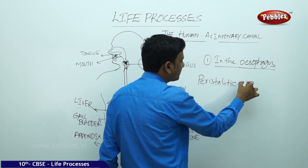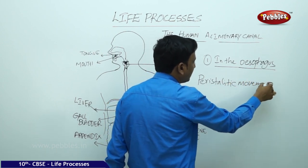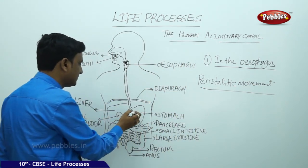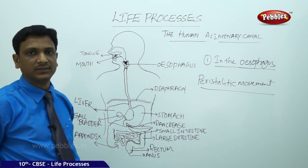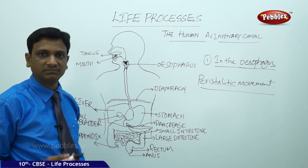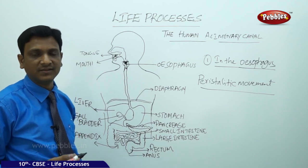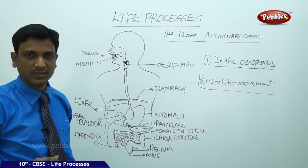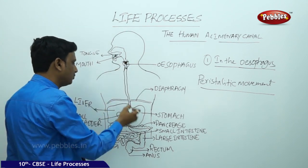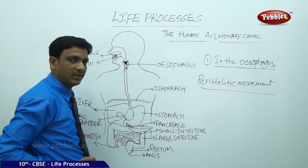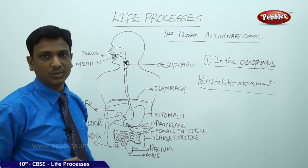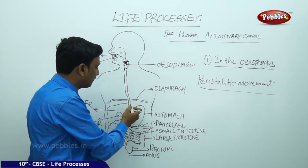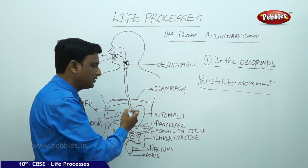Peristaltic movements help the food pass through the esophagus into the stomach. There is no digestion in the esophagus — it is just a passage, a tube through which the food passes from mouth to stomach. Only the peristaltic movements push the food downwards into the stomach.